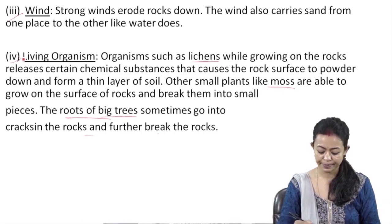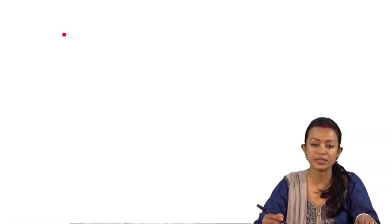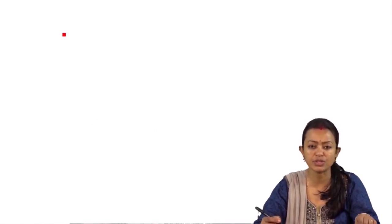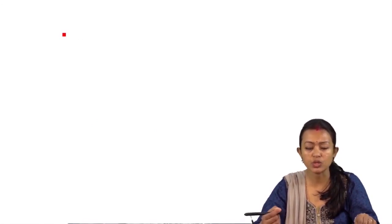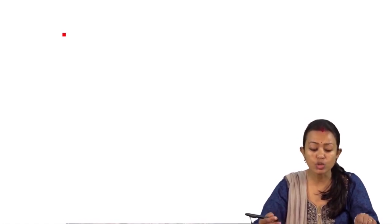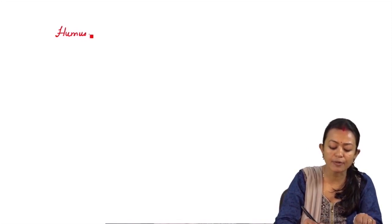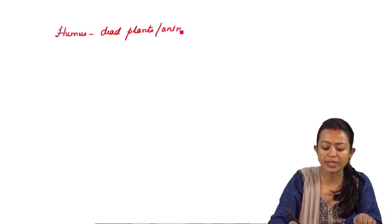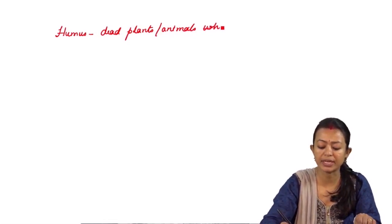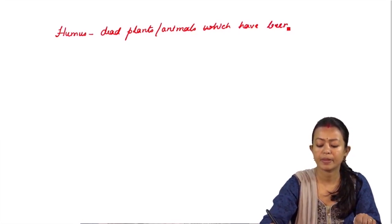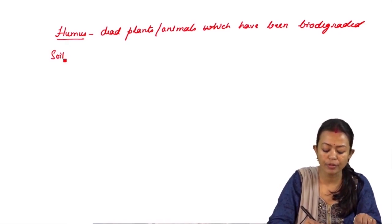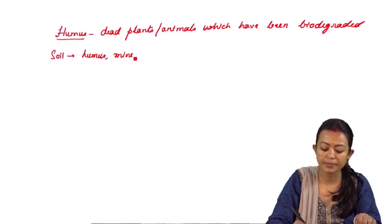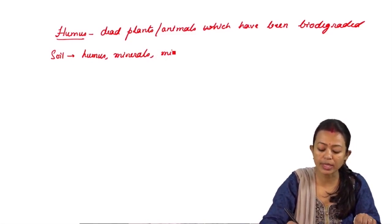Soil is a mixture of small particles — soil particles, small rock particles, and pebbles. Soil also contains what is known as humus. Humus is formed by the biodegradation of dead plants and animals. Soil also contains different minerals and microorganisms.